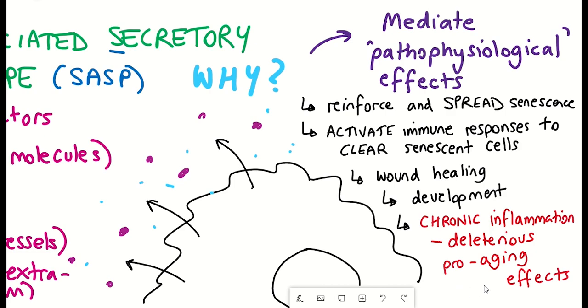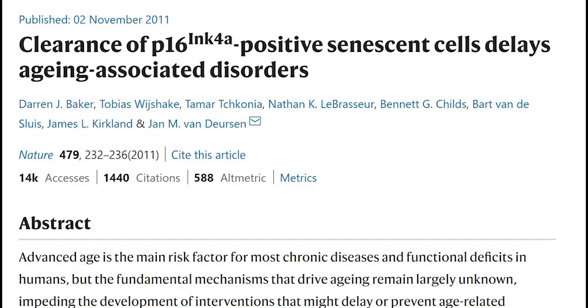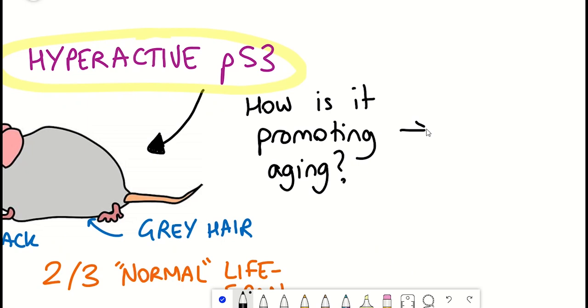And I've mentioned numerous times in this channel about senescent cells and their clearance and the impact. But just to point out one study, this study showed that in mice removing the senescent cells delayed age-associated disorders.